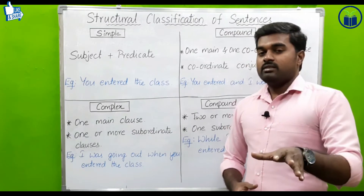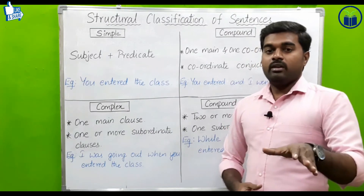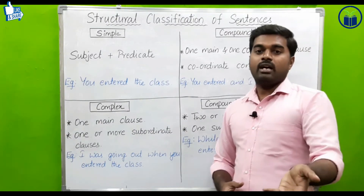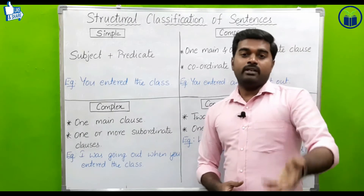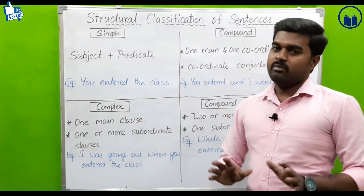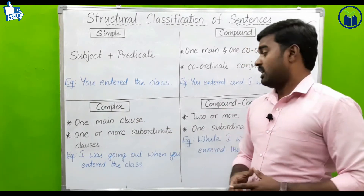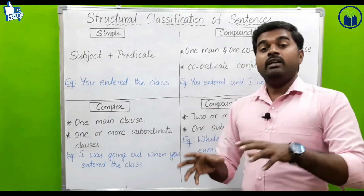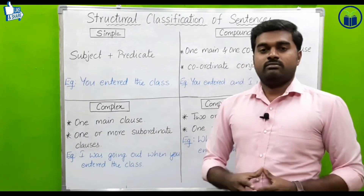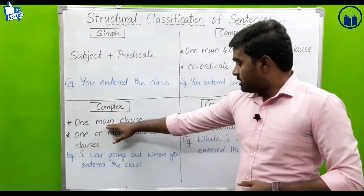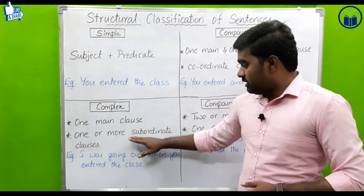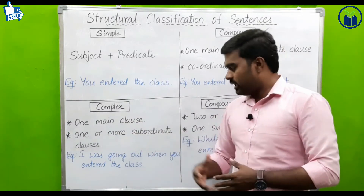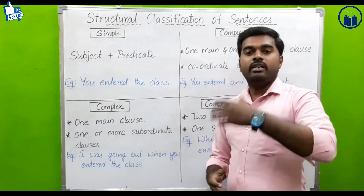Main clause means the principal clause or independent clause. The subordinate clause is the dependent clause — it cannot stand alone and depends on the main clause for its meaning.